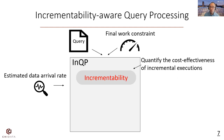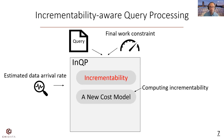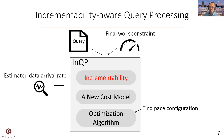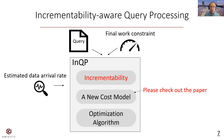In NQP, we propose a novel metric, incrementability, to quantify the cost-effectiveness of incremental executions. We have a new cost model based on existing work to compute incrementability and propose an optimization algorithm that leverages incrementability to find the pace configuration to reduce the total work. In this talk, I will focus on the definition of incrementability and the optimization algorithm.